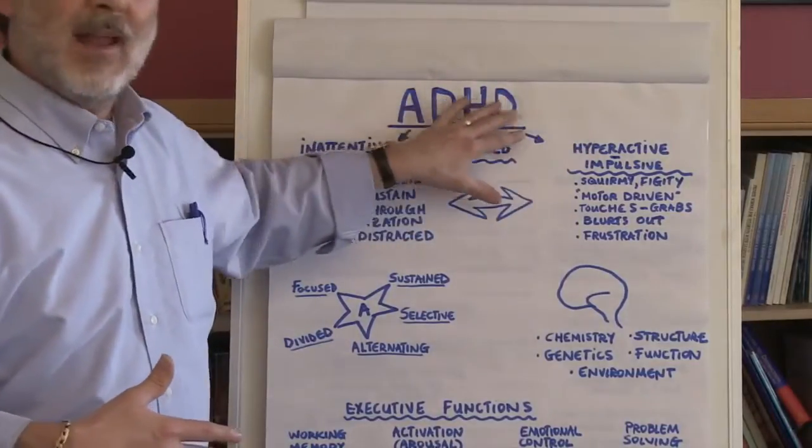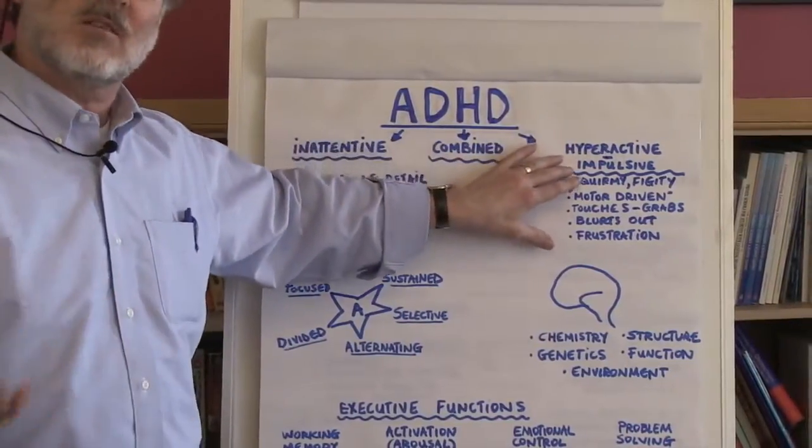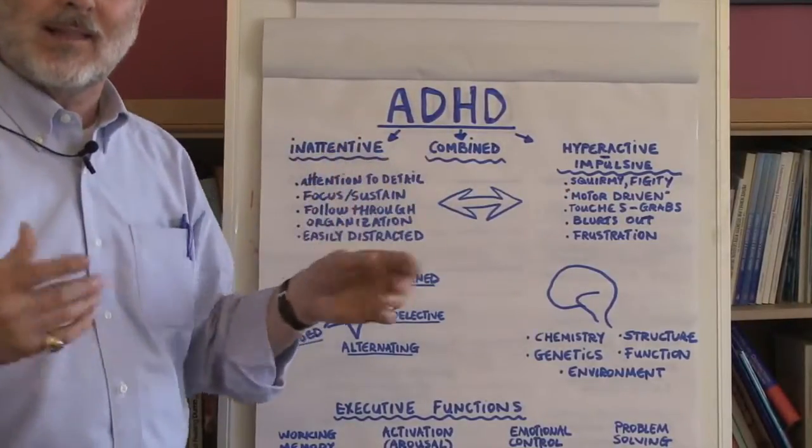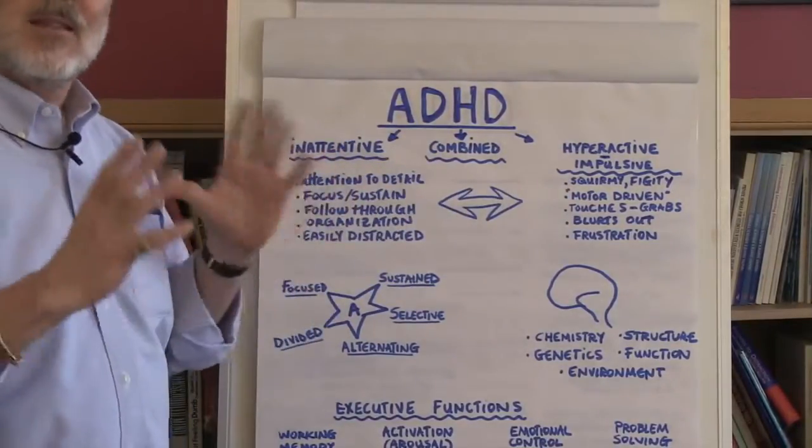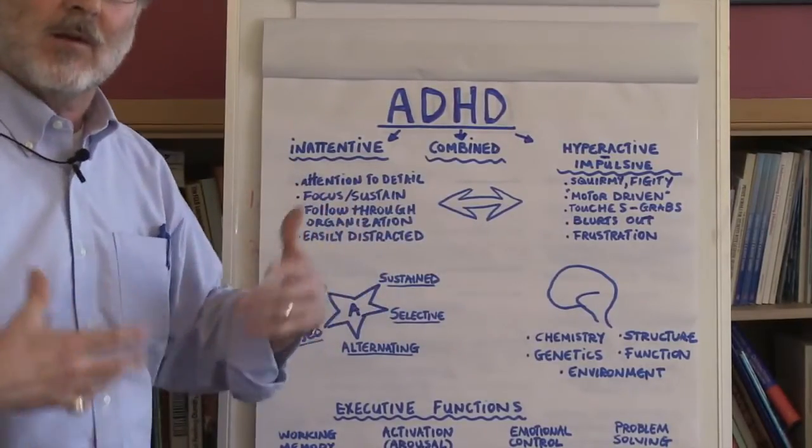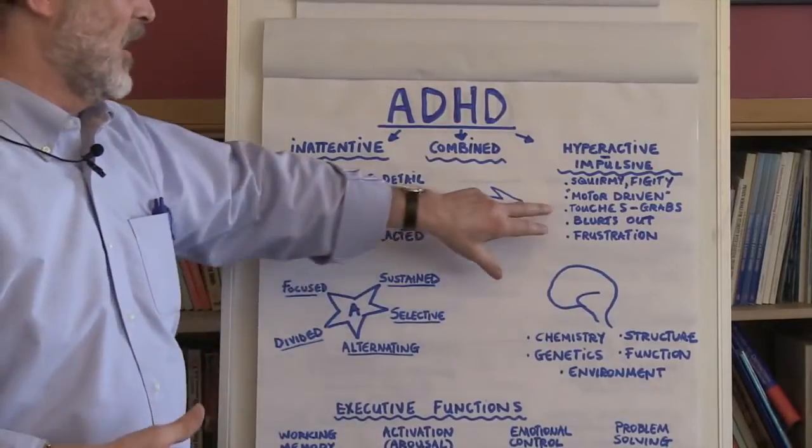For those individuals who have ADHD hyperactivity or hyperactive and impulsive type, very often you see they're the squirmy kids who are wiggling in their seats and playing with their pencils, and they have a hard time sitting still. It's almost like they have this motor inside of them and they're driven by this low level of activity pretty much all the time.